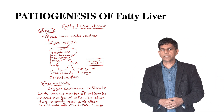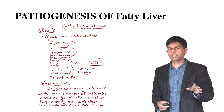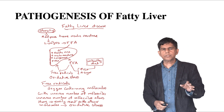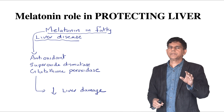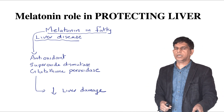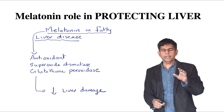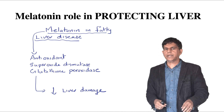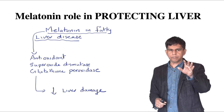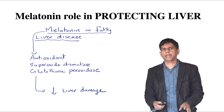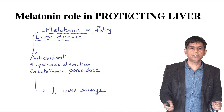Melatonin acts as an antioxidant, working through superoxide dismutase and glutathione peroxidase. These enzymes can control free radical formation and protect the liver through this mechanism.